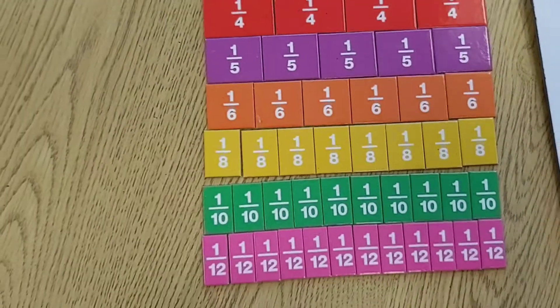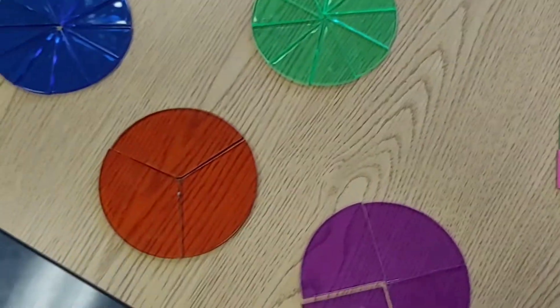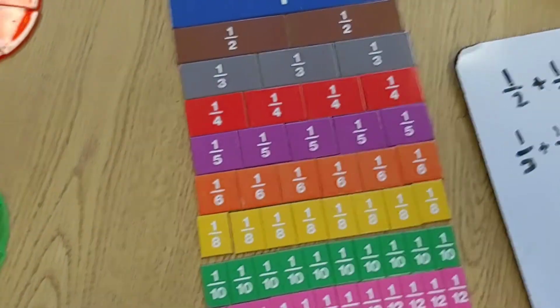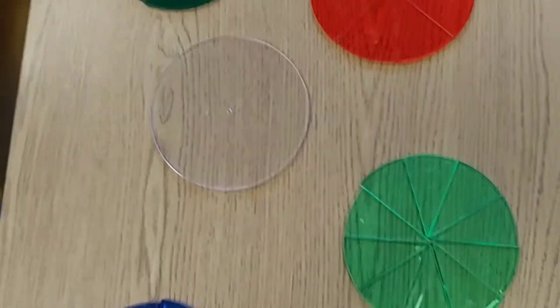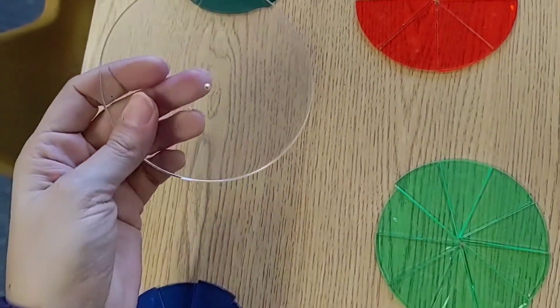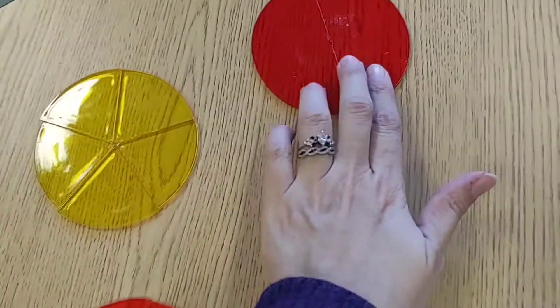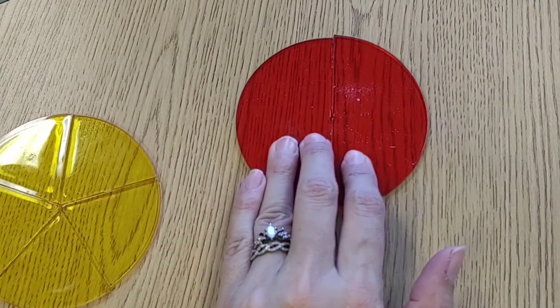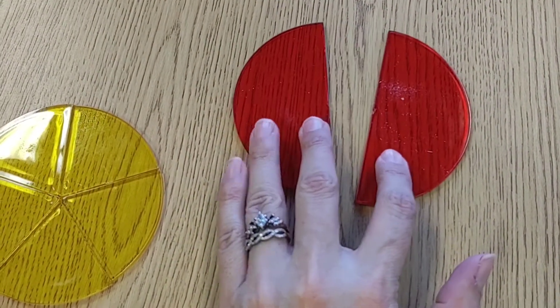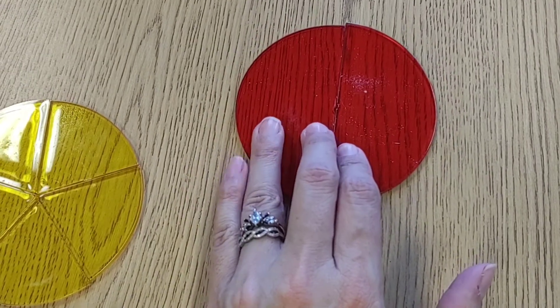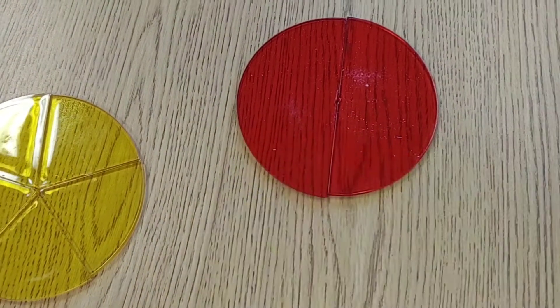So let's look at what that looks like with fraction circles. These are fraction bars. So these are called fraction circles. Here's my one whole. It's not broken up at all. It is a whole. My halves, I need two of them to equal one whole. So this shows you what it would look like in a fraction circle.